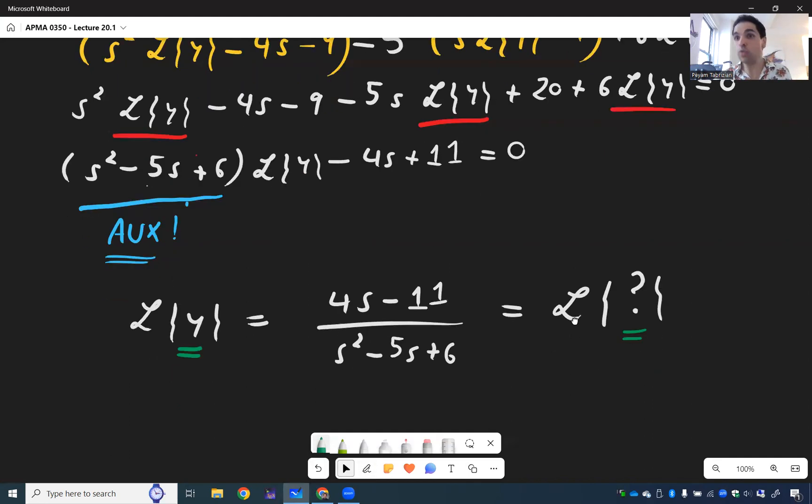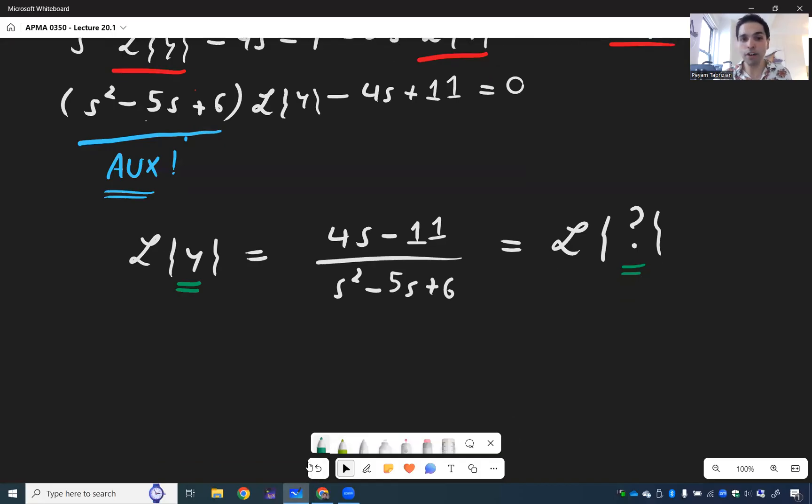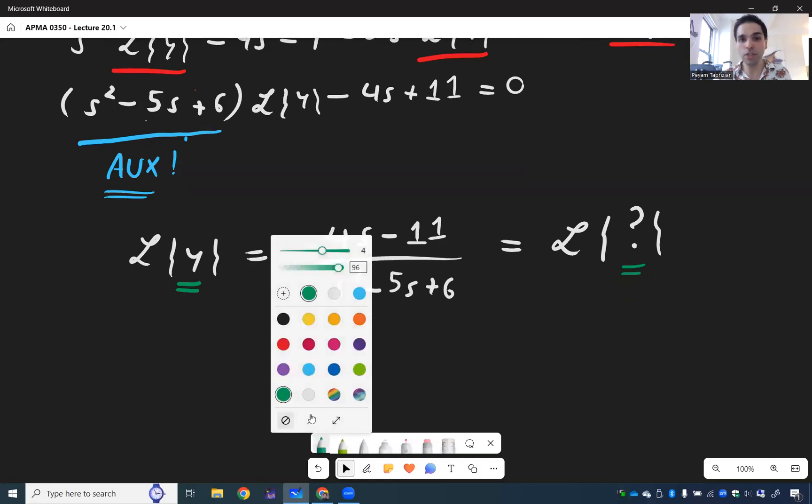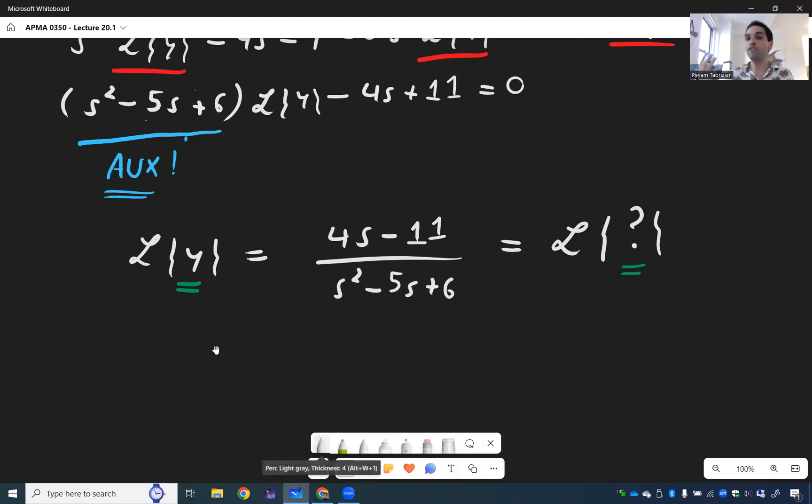And in order to do the uncovering, what we would like to do, we would like to write the fraction 4s minus 11 over s squared minus 5s plus 6 in a simpler form. And in order to write this fraction in a simpler form, yes, you may have guessed it, we have to use partial fraction.